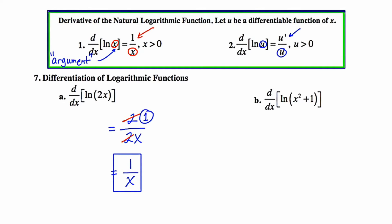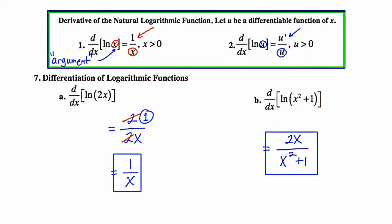In 7b, we're asked to find the derivative of the natural log of x squared plus 1. Our argument is x squared plus 1, and that goes in the denominator. The derivative of x squared plus 1 is 2x. Unlike 7a where we could cancel, there's really nothing to cancel out here, so we're done. Let's go on to slide 2 where there are more examples.